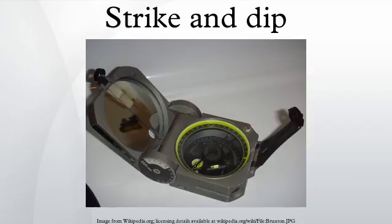True dip can be calculated from apparent dip using trigonometry if you know the strike. Geologic cross sections use apparent dip when they are drawn at some angle not perpendicular to strike.